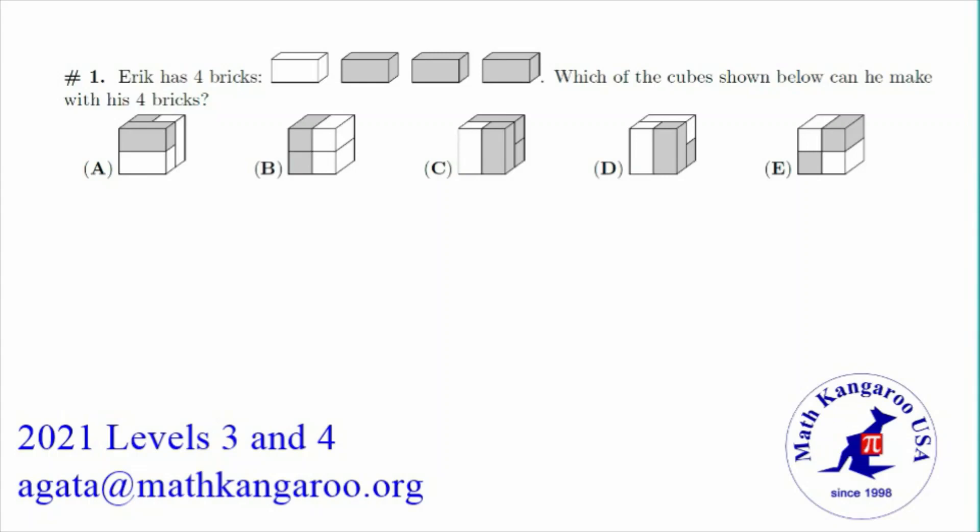A, B, C, D, or E? We are going to look at the number of bricks in each cube and see which one has only 1 white one and 3 grey ones.